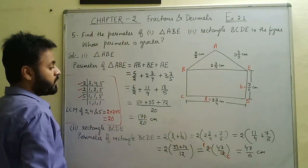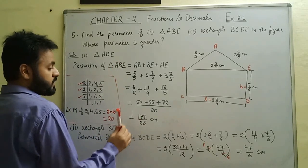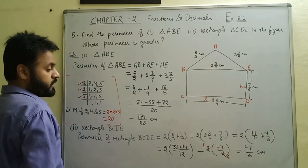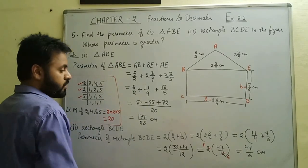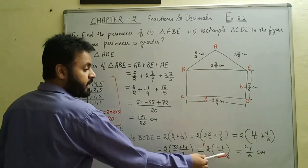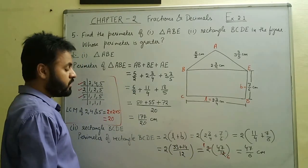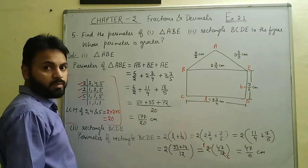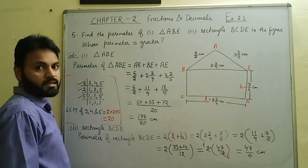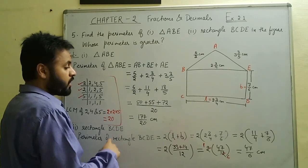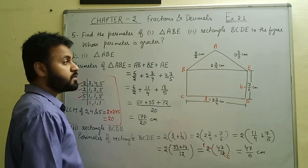Now we compare: perimeter of triangle ABE is 177/20 cm and perimeter of rectangle BCDE is 47/6 cm. Since both are unlike fractions, comparing them directly is not easy. We will use the cross multiplication method.